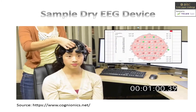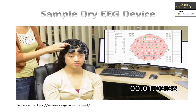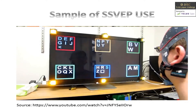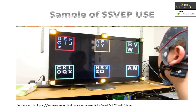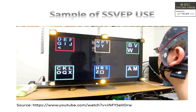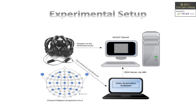Using the impedance check display built into Neuroguide, we can see which positions are not contacting well. This is how the authors set up their experiment. The subjects wearing the dry EEG headset sat in front of a 60Hz refresh rate LCD monitor, and data was recorded from a range of SSVEP stimuli frequencies.